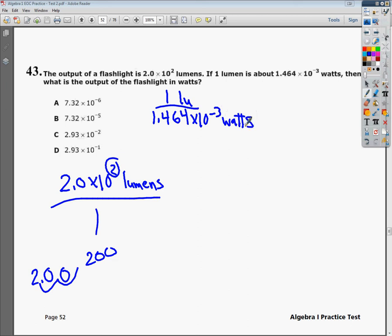Now, I can write that conversion factor that way, or I could put the 1 lumen on the bottom and 1.464 times 10 to the negative 3 watts on top. I have both those options.